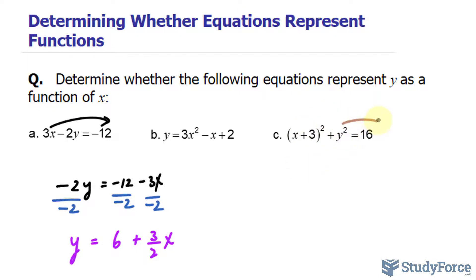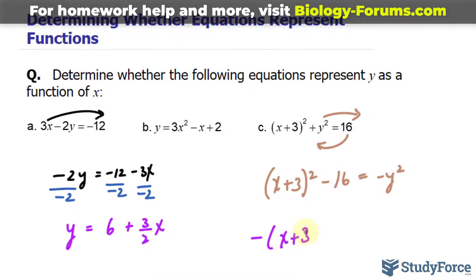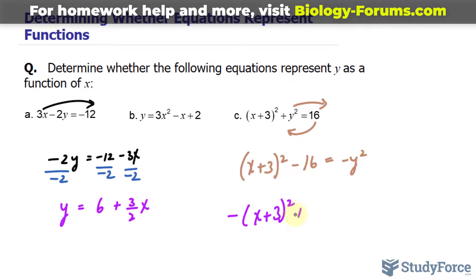Let's say I'm solving for y here. I'm going to take that over and take this over. So I have (x + 3)² minus 16 is equal to negative y². I'll multiply the whole equation by negative 1 just so that I get rid of this leading coefficient of negative 1. So I have negative (x + 3)² plus 16 is equal to y².